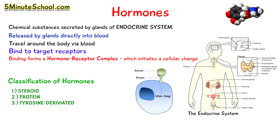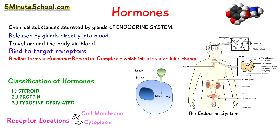Remember, hormones don't have a direct effect on cells to induce a change. They first bind to receptors and form a hormone receptor complex, which then initiates a change. The receptors can be located either on the cell membrane, found in the cytoplasm of the cell, or located in the nucleus of a cell.